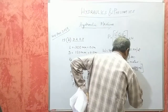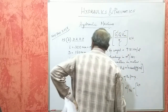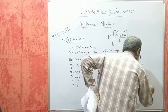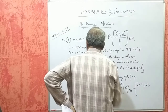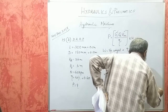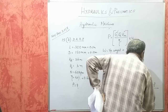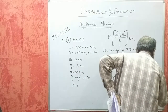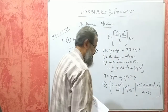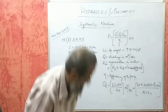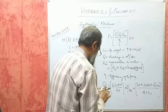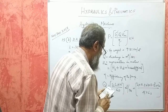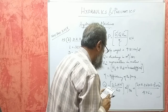L is the stroke length, substituted in meters — it is given as 300 mm, converted to 0.3 m. A is the area of the cylinder: π·D²/4, where D is 0.15 m, so A = π × (0.15)² / 4. N is 60 RPM. So Q = 2 × 0.3 × π × (0.15)² / 4 × 60 / 60.